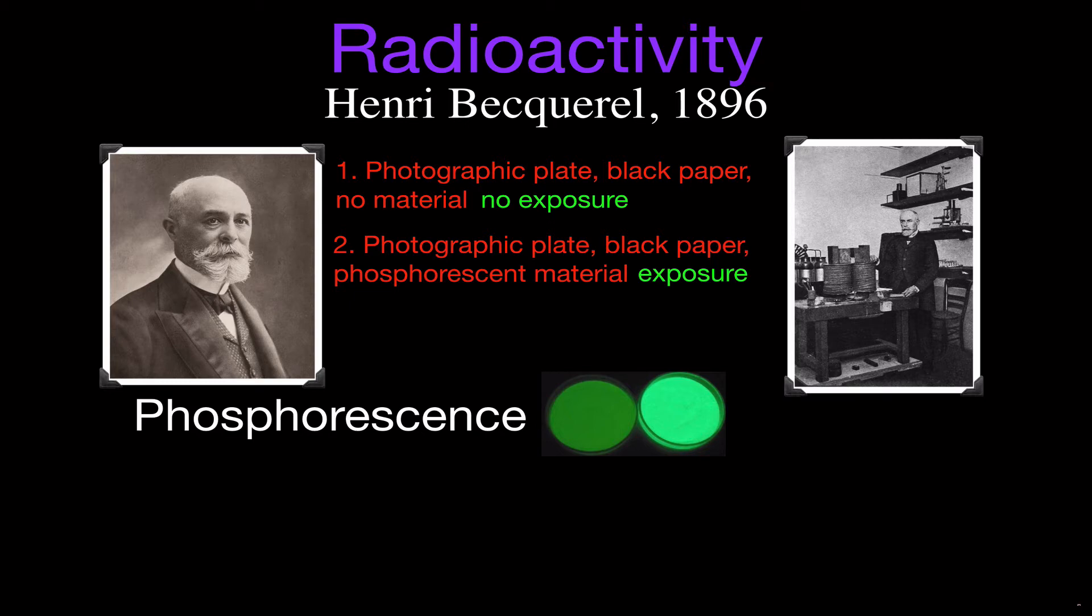And he put that on the photographic plate, left it outside, came back in, developed the plate, and sure enough, he could see an outline of that material on the photographic paper. So there was some exposure to the photographic plate. That means there was some energy coming from that phosphorescent material that was going through the black paper.